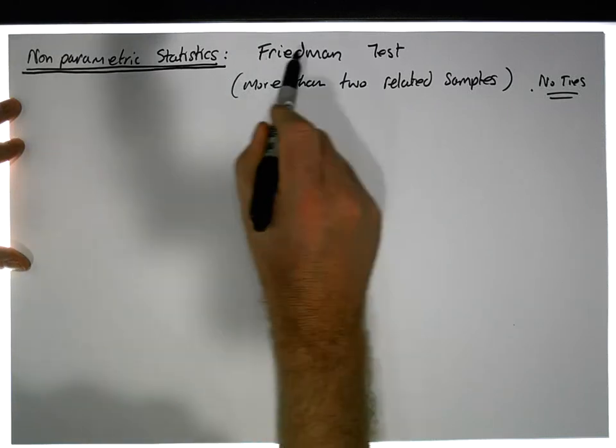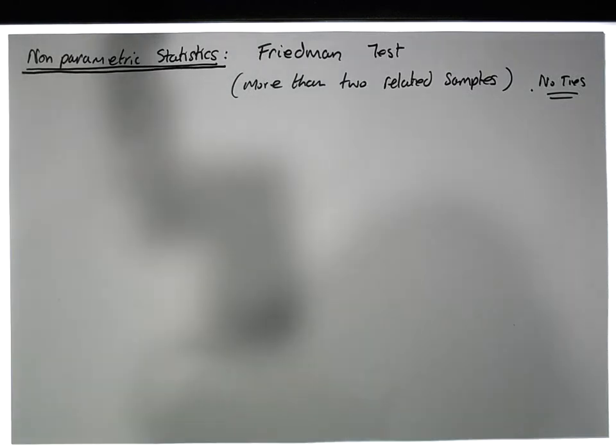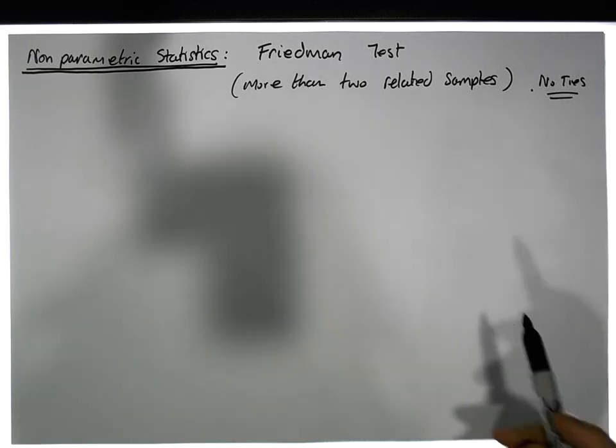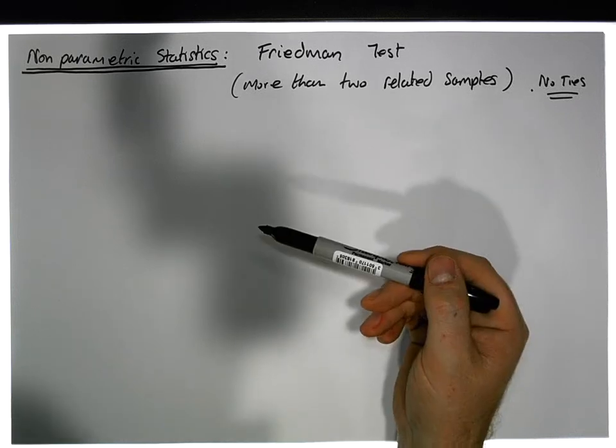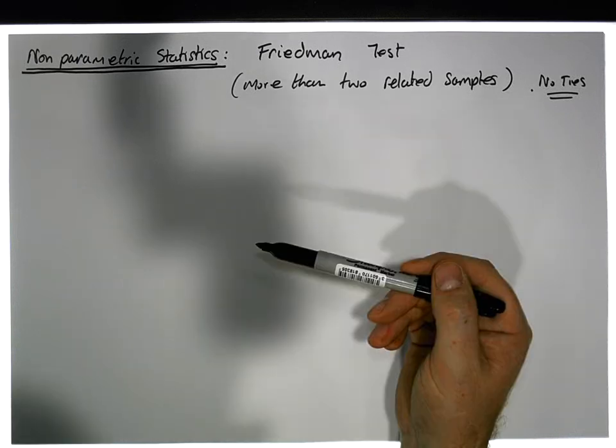we're going to consider what's known as the Friedman Test, which is a test of related samples where you measure more than two samples and they're related—the measurements are dependent on each other.